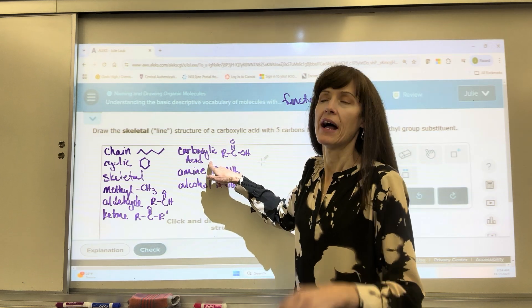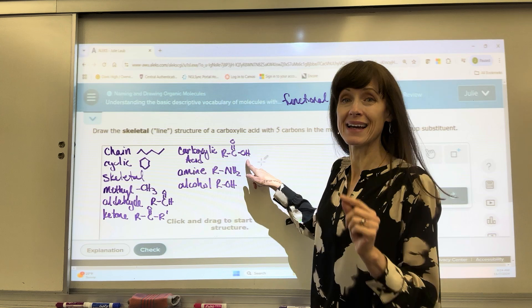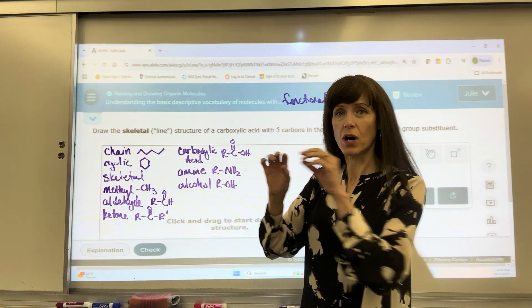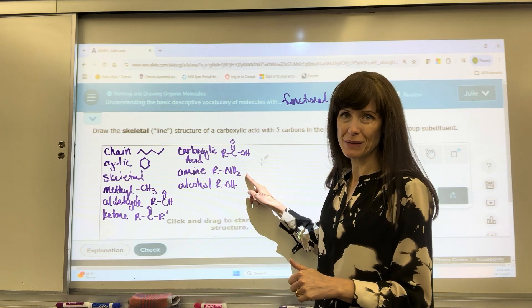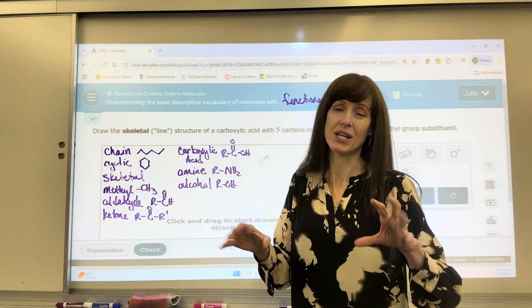Carboxylic acid, at the very end of the carbon chain, you have a double bonded oxygen and an OH. An amine, you're going to have your carbon chain and somewhere, it doesn't matter where, there's a nitrogen bonded to it. And then alcohol, somewhere in that carbon chain, there's an OH.